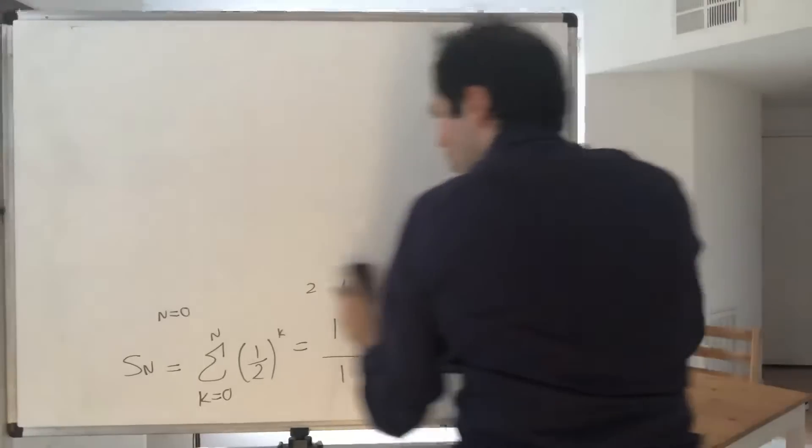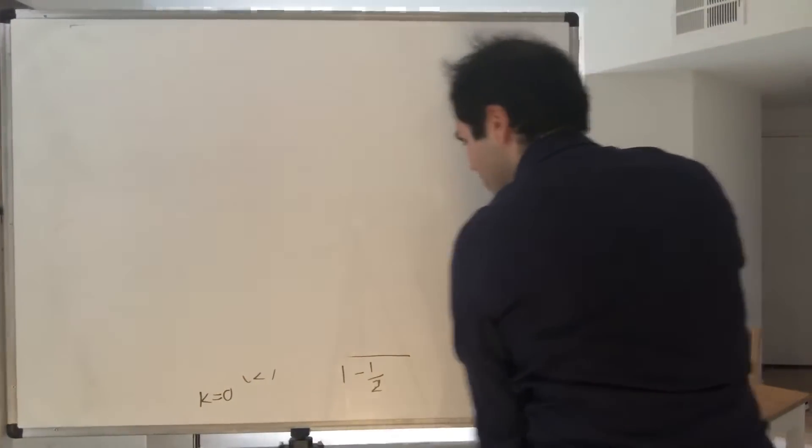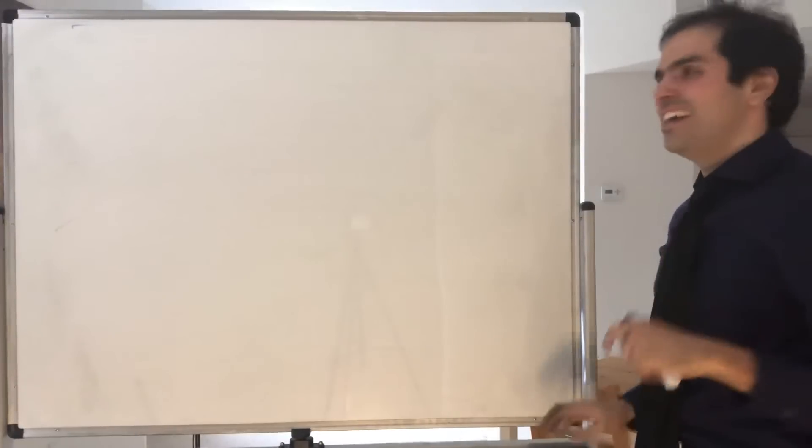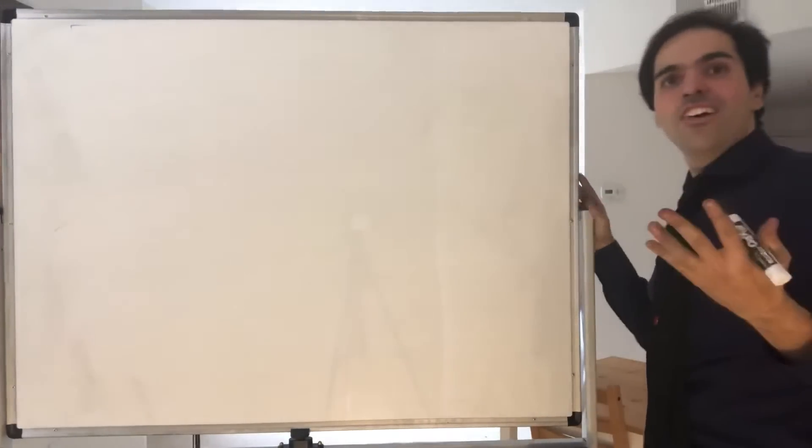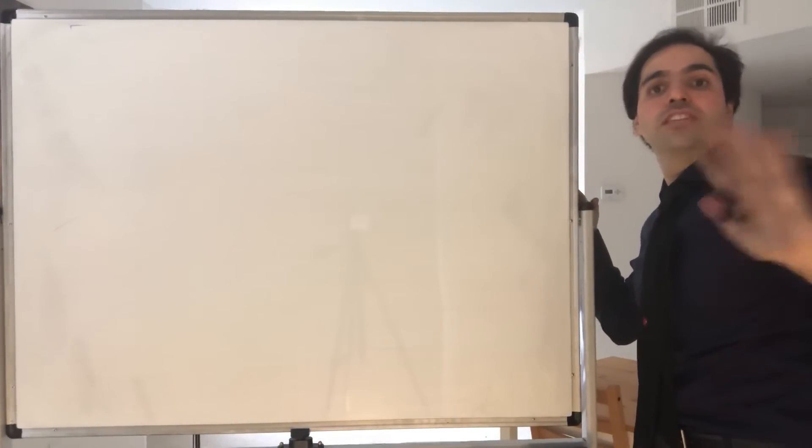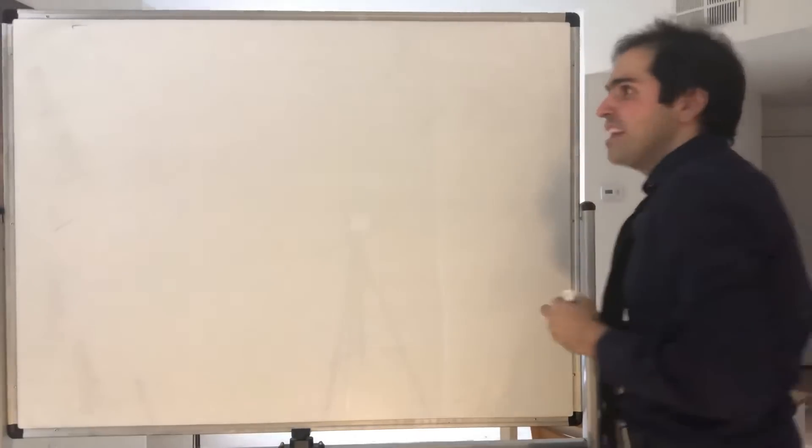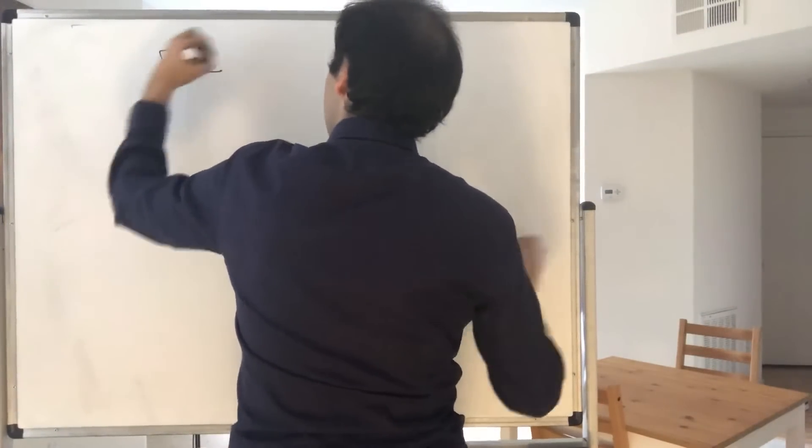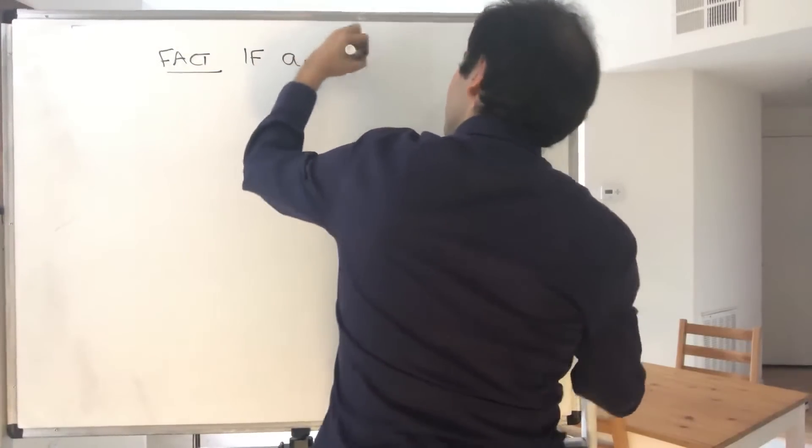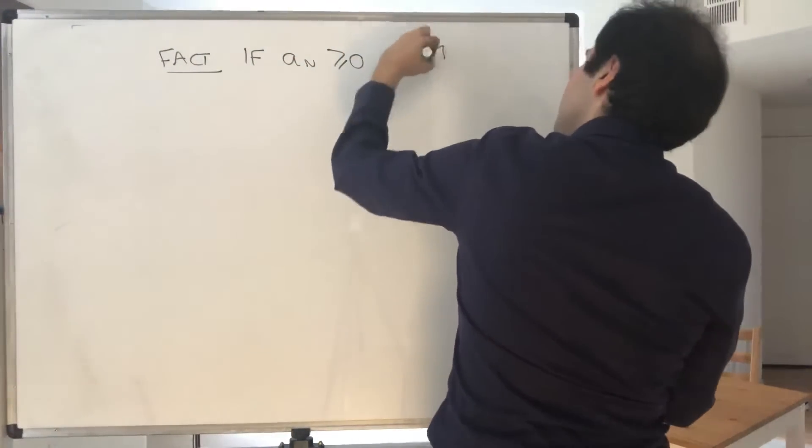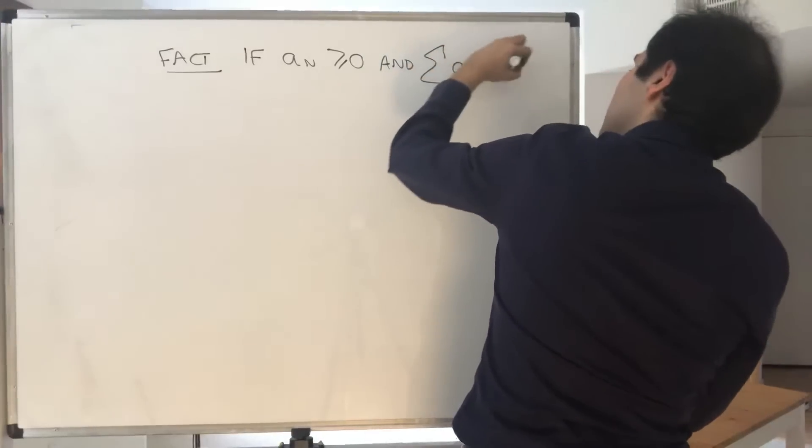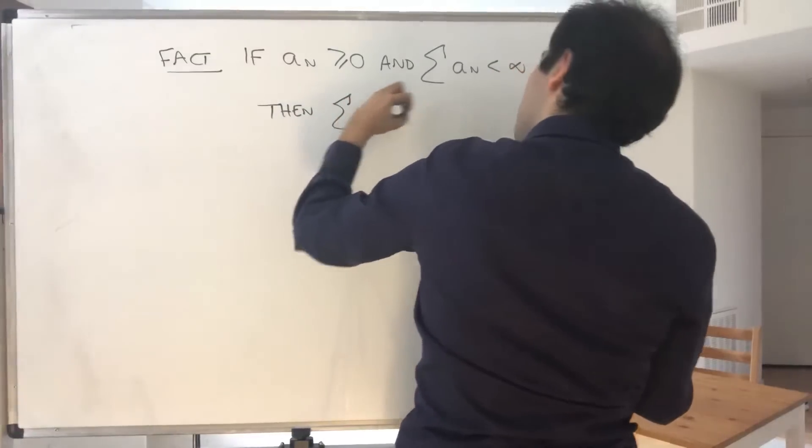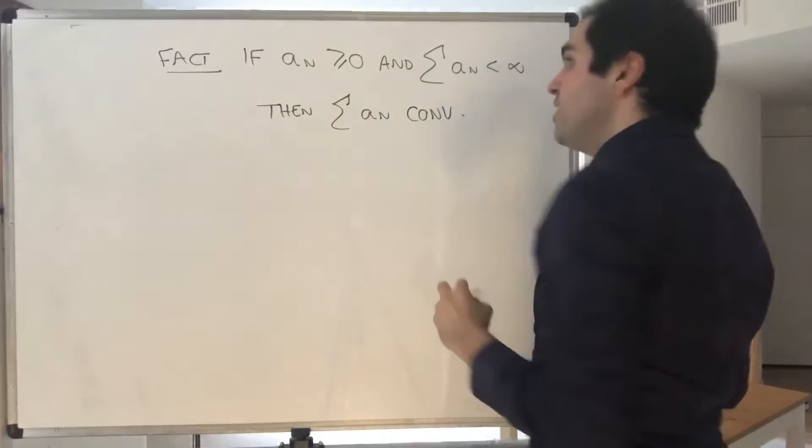So, first of all, one thing I want to mention, because it's usually told in calculus, but you usually don't have an idea why it's true. But usually in calculus, they say, well, just determine if the series is finite. Why is that true? So, first of all, fact: if a_n is greater or equal to 0, and the series is bounded, then it converges.